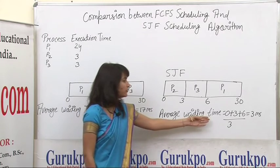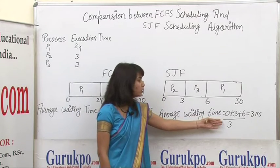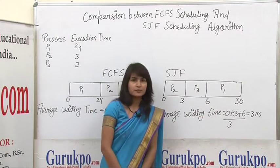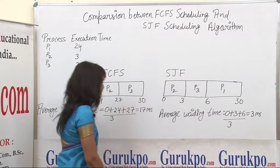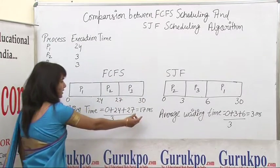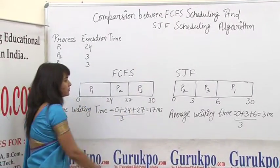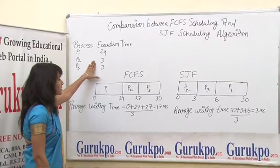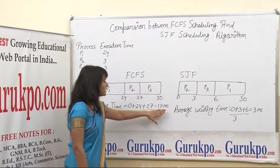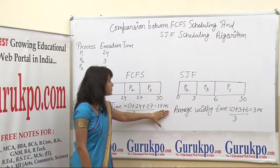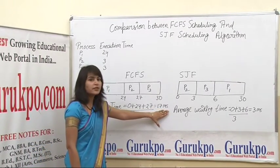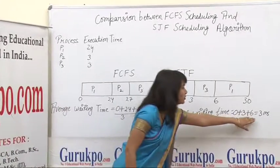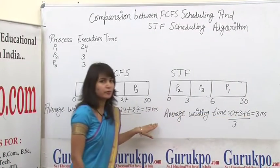The average waiting time according to the SJF policy is 3 milliseconds. Hence, we can see that after the comparison on the same set of processes, the average waiting time in FCFS policy is very high in comparison to the SJF policy.